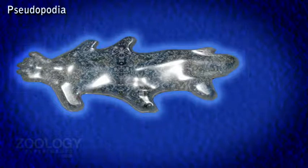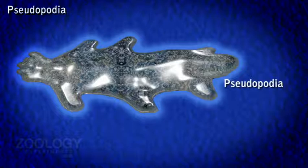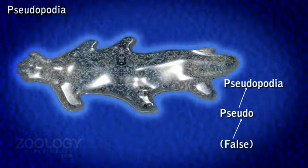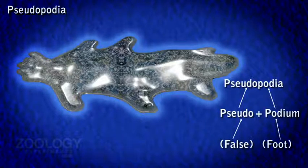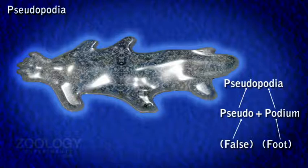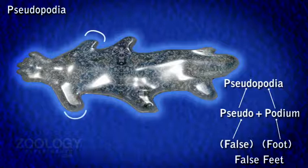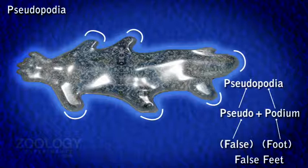Pseudopodia. Pseudopodia is derived from two words: pseudo means false and podium means foot. These are irregular, blunt processes of the cell body. They are also called false feet. These are of variable size and are capable of projecting out or withdrawing.